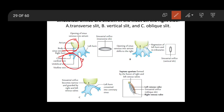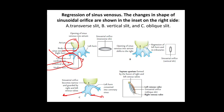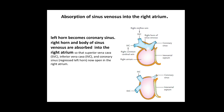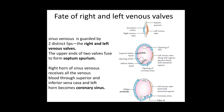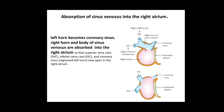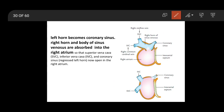All three tributaries — the common cardinal vein, umbilical vein, and vitelline vein — will also open into the right atrium, but the umbilical vein gets degenerated later. The common cardinal vein will form part of the superior vena cava, and the vitelline vein will form part of the inferior vena cava. So finally, three tributaries open into the right atrium: the coronary sinus (left horn), the superior vena cava, and the inferior vena cava.